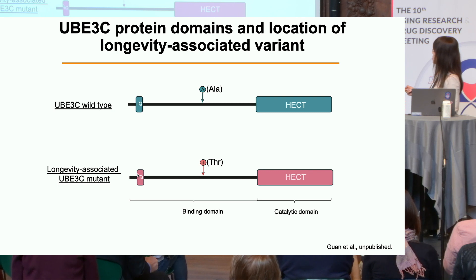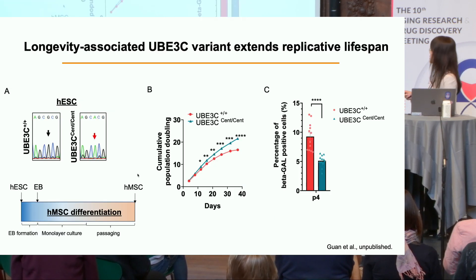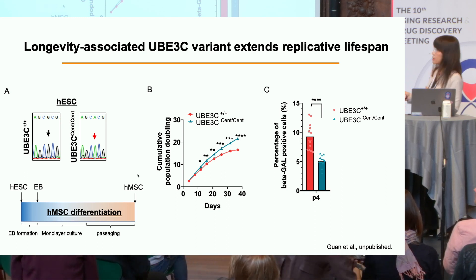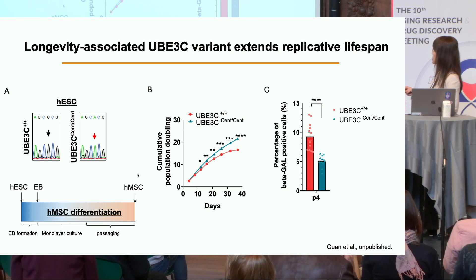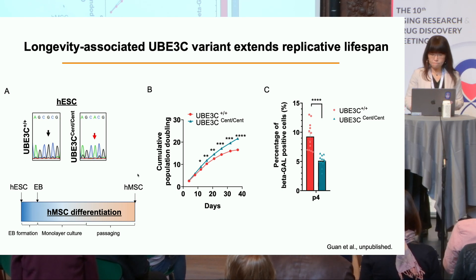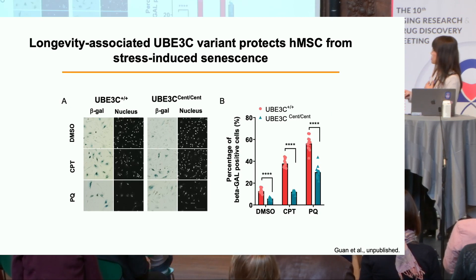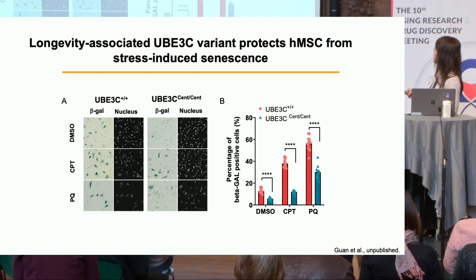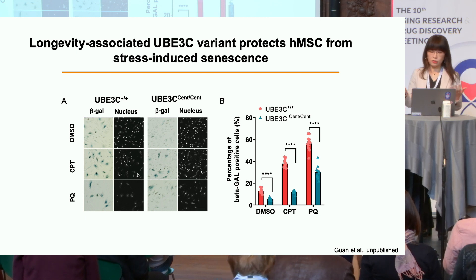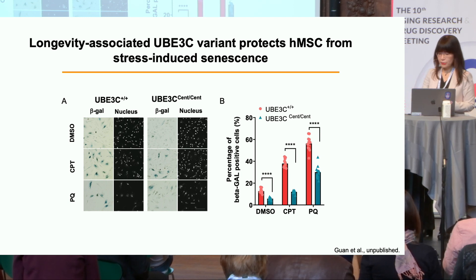The mutant is located at the putative substrate binding site — it changes alanine to threonine. We generated knock-in cells in human embryonic stem cells differentiated into mesenchymal stem cells, and in the endogenous genomic context, during replicative senescence, the mutant cell shows increased replicative lifespan compared to the wild type. When we treat them with DNA-damaging agent etoposide, stress-induced senescence is also reduced in centenarian mutant cells compared to wild type. So the UB3C longevity-associated variant dampens the senescence response.